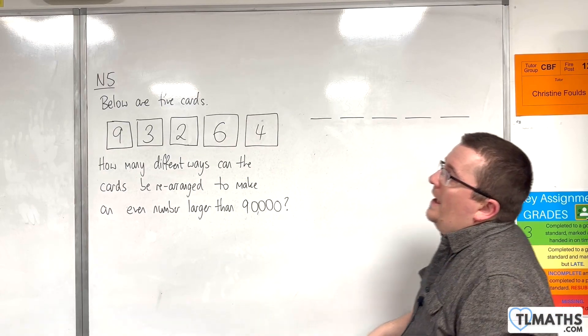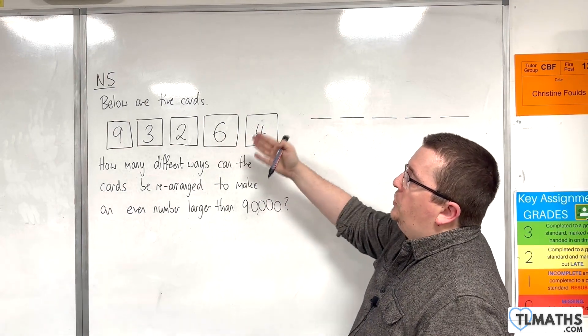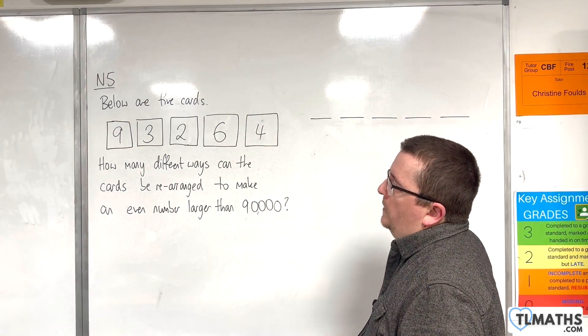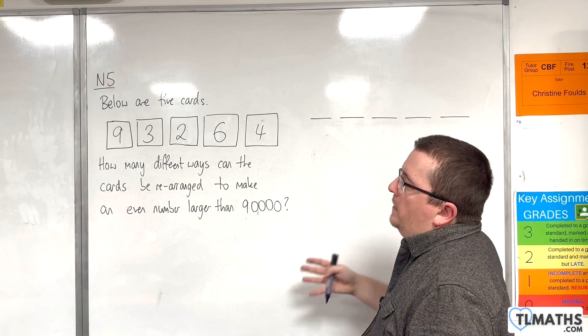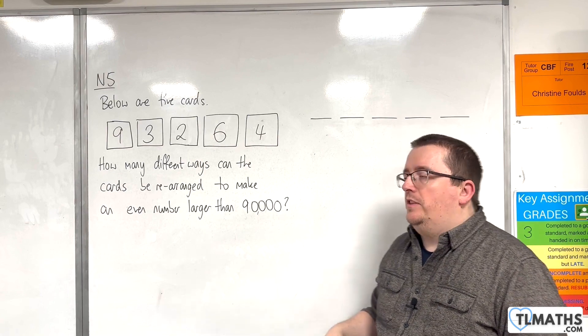Okay, so in this video we have five cards. They're numbered 9, 3, 2, 6, and 4. How many different ways can the cards be rearranged to make an even number larger than 90,000?